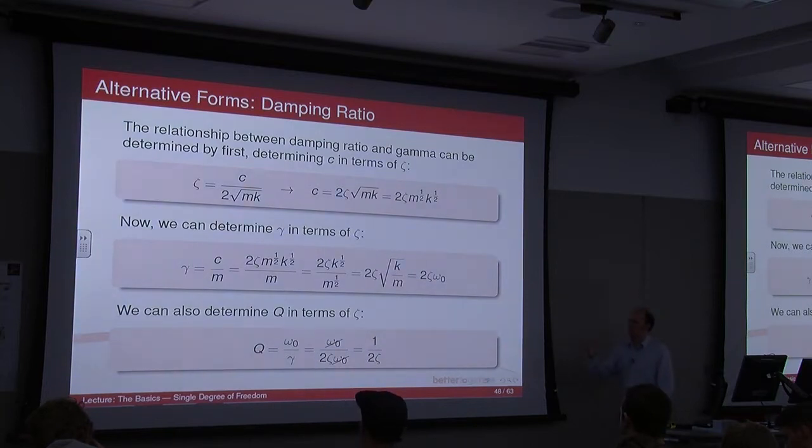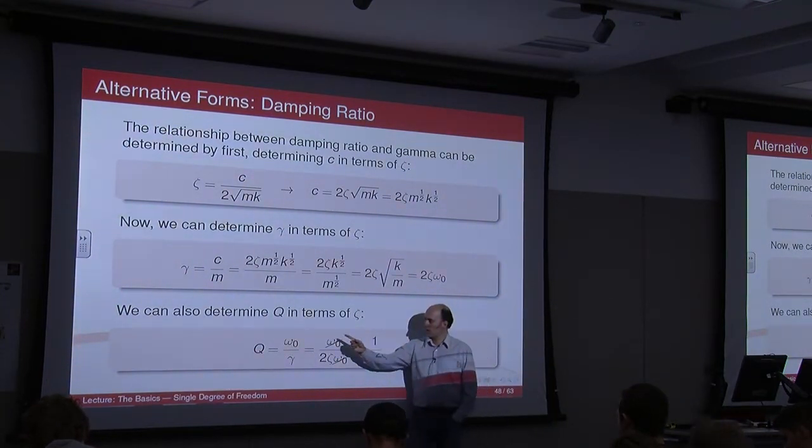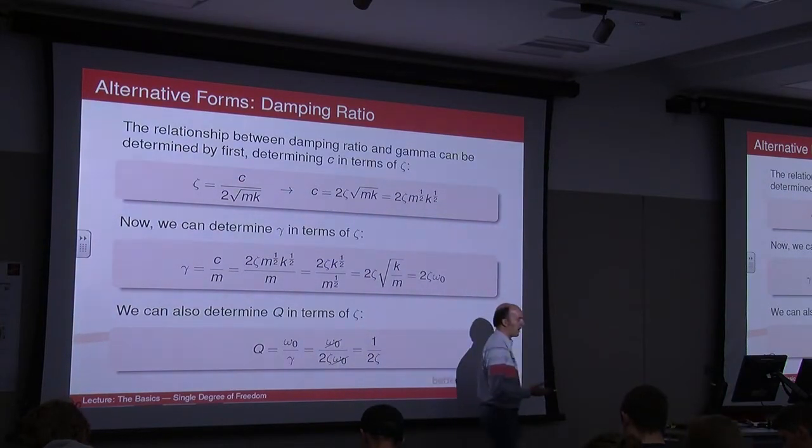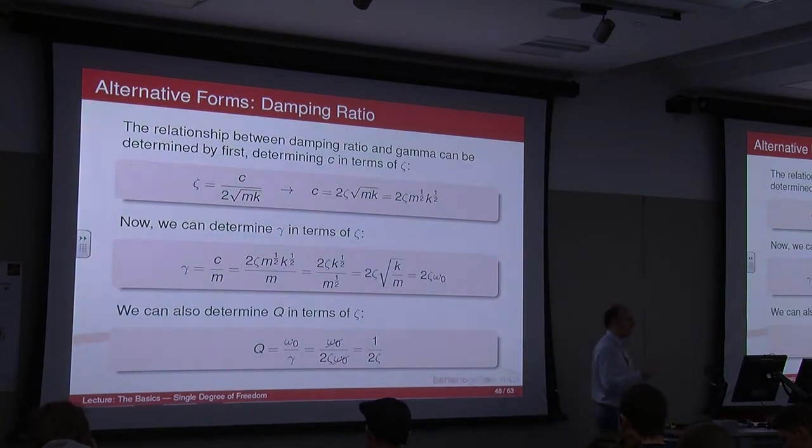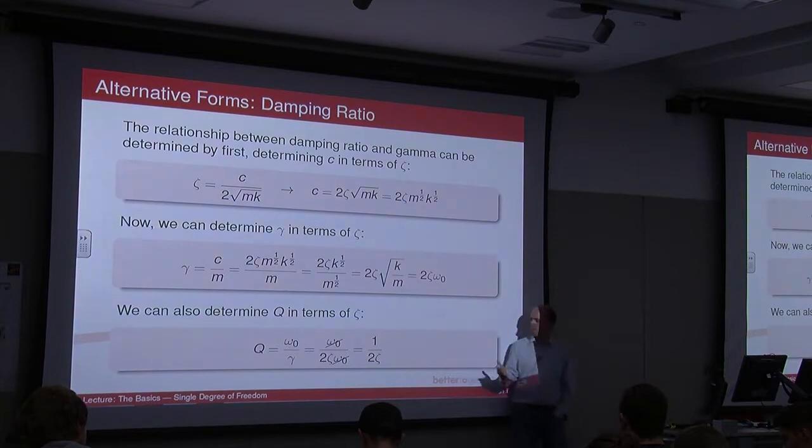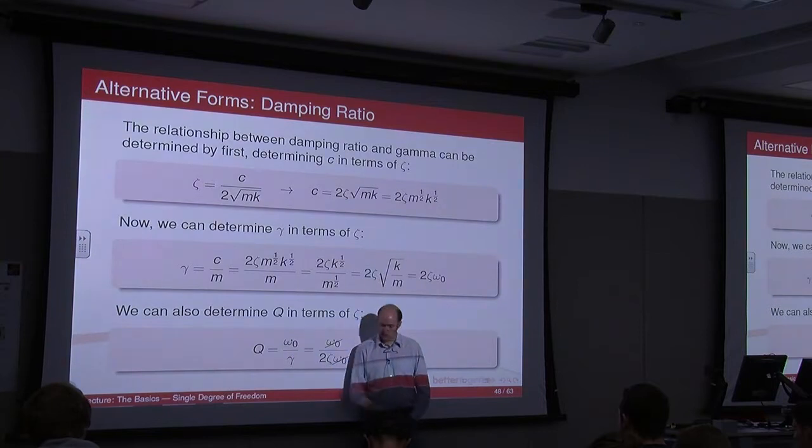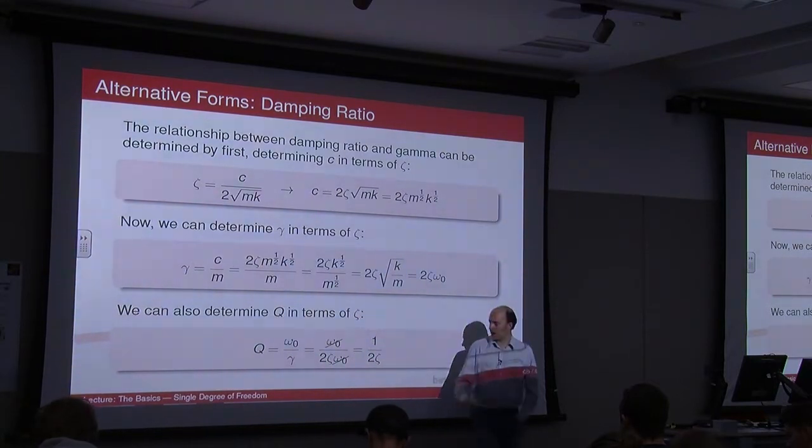And last week we also covered the term Q, which is the quality of oscillation. If you remember, a low Q meant that we had a high damping, and a high Q meant we had low damping. If you've got a high quality oscillator, then it oscillates very nicely. So we can again, Q we defined last week as omega naught divided by gamma.